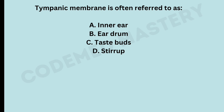The tympanic membrane is often referred to as — option A: inner ear, option B: eardrum, option C: taste buds, option D: stirrup. The right answer is option B, eardrum. The tympanic membrane is a thin membrane that separates the outer ear from the middle ear and vibrates in response to sound waves, enabling us to hear.